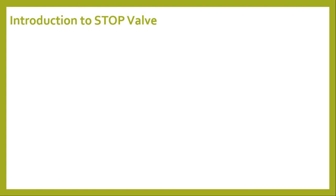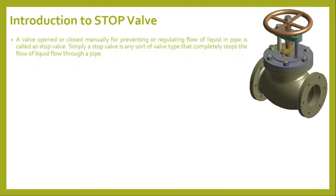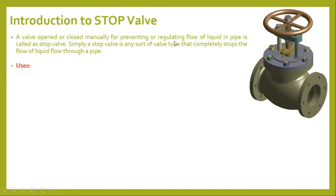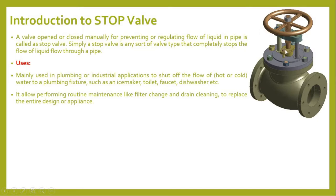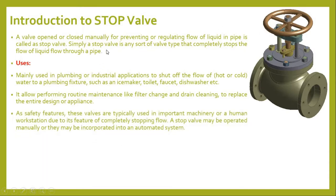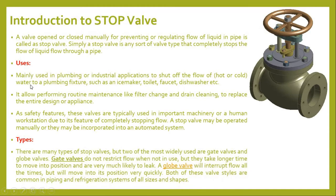This slide gives a small introduction to the stop valve. A valve that opens or closes manually for preventing or regulating flow of a liquid in a pipe is called a stop valve. It is used to stop the flow of fluid by regulating the hand wheel. Users mainly use it in plumbing or industrial applications to shut down flow of liquid — whether hot or cold water — such as ice maker, toilet, faucet, or dishwasher.